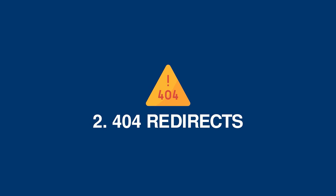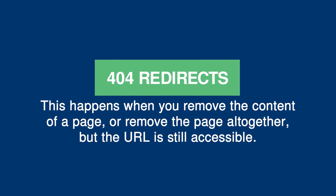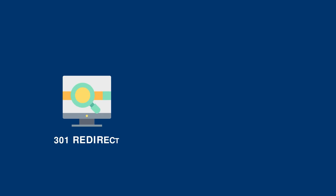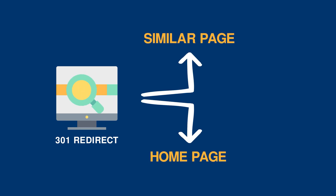Next we have 404 redirects. Your users will be faced with a 404 redirect when you've removed the content of a page or removed the page altogether, but the URL still exists for them to access. The best thing to do is to set up a 301 redirect. This will take your users to a similar page or at least to the home page. That way you can retain around 90% of the SEO that you built up for that URL and you will not harm the user experience. However, if this can't be done for whatever reason, make sure that your 404 error page is at least interesting or provides some sort of information or link back to another page.